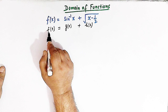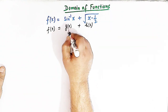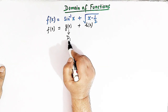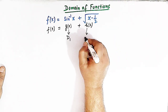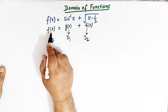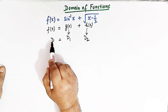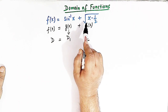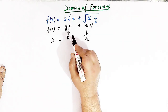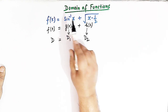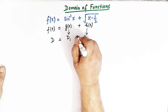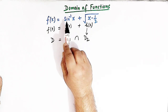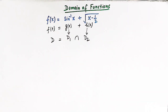to find out the domain of f of x, we find the domain of g of x — let us denote it as d1 — and the domain of h of x as d2. The domain of f of x is given by the common values of x which satisfy sin inverse x and square root of x minus 1 over 2 simultaneously. So first we find the domain of each function, then we take the intersection of these two domains. This is the concept behind finding the domain of a function expressed as a sum of two or more functions.